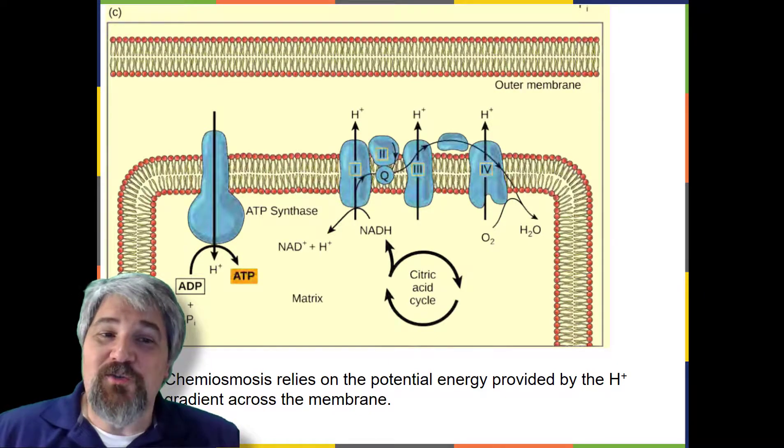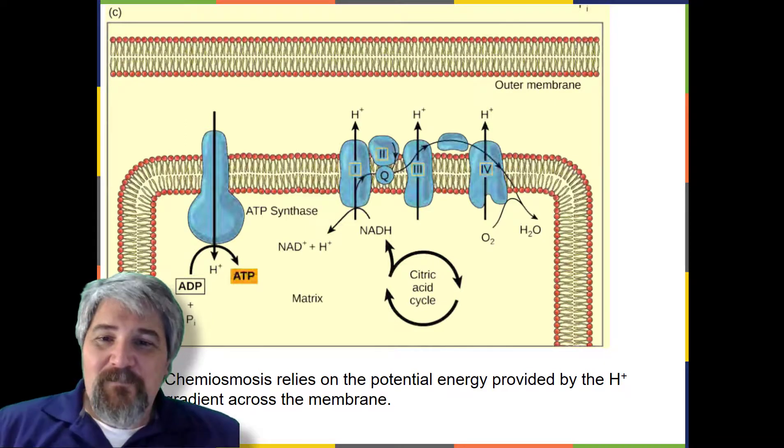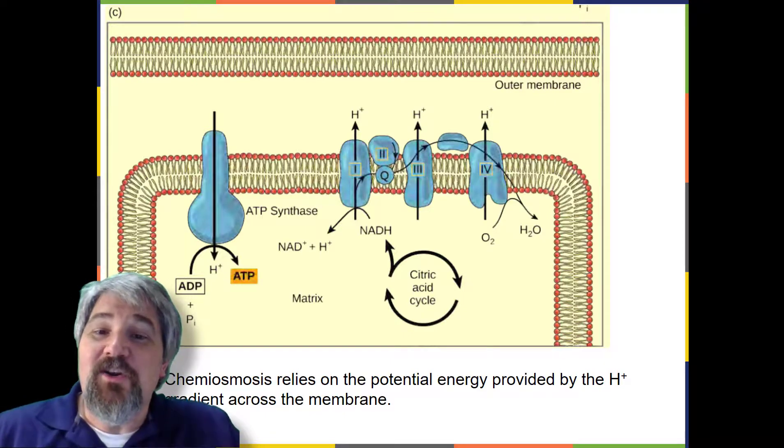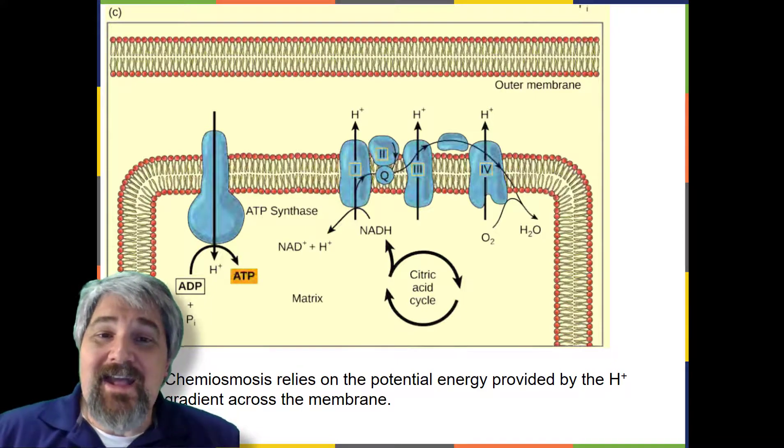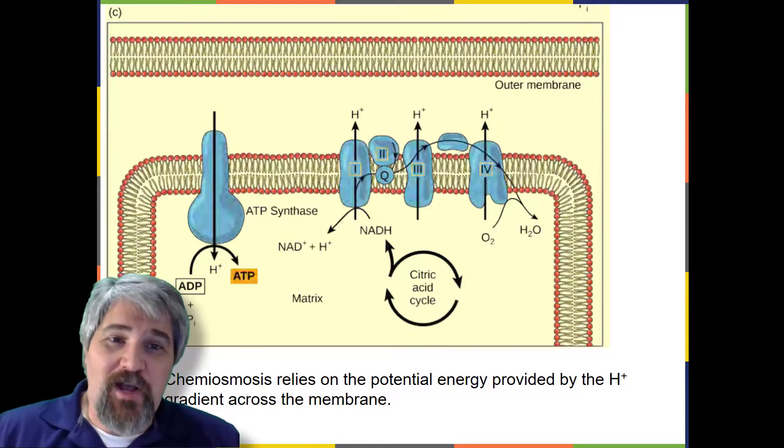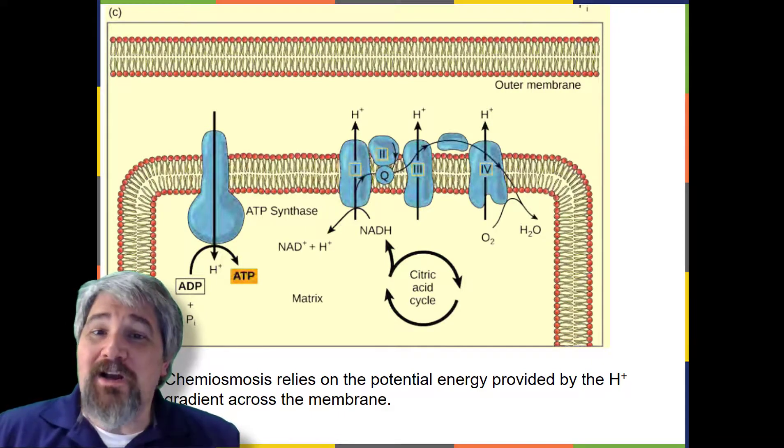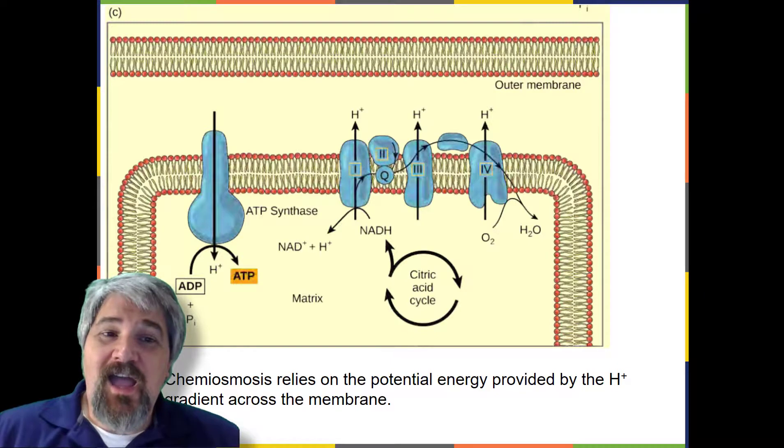In each transfer of an electron through the electron transport chain, the electron loses energy. But with some transfers, the energy is stored as potential energy by using it to pump hydrogen ions across the inner mitochondrial membrane into the intermembrane space, creating an electrochemical gradient. Electrons from NADH and FADH2 are passed to protein complexes in the electron transport chain. As they are passed from one complex to another, there are a total of four, the electrons lose energy, and some of that energy is used to pump hydrogen ions from the mitochondrial matrix into the intermembrane space.